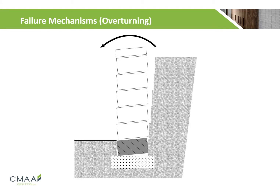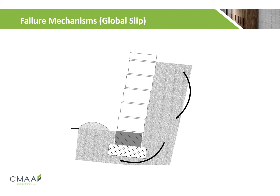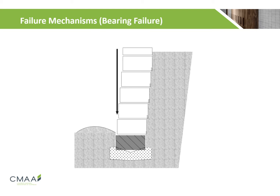Overturning failure is the rotation of the wall about the toe, due to the exceeding moment by rotational forces overcoming resisting forces. Global slip failure occurs when the internal strength of the soil fails to support the complete soil mass, resulting in a sliding rotational failure plane along the boundary. Bearing failure occurs when the underlying soil fails to support the weight of the retaining wall structure, causing it to sink downwards.